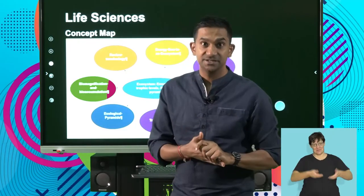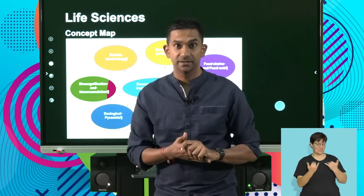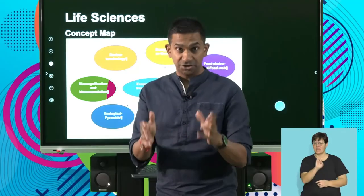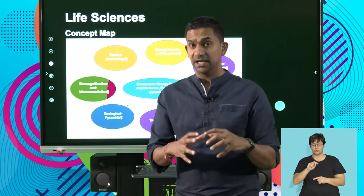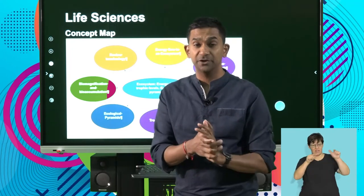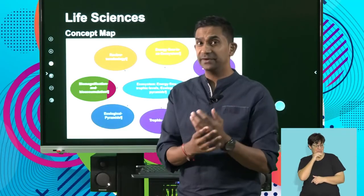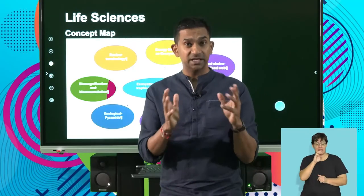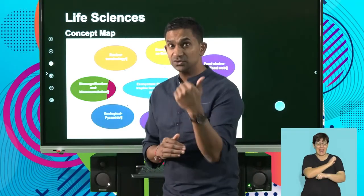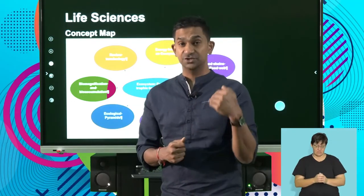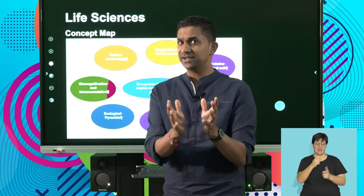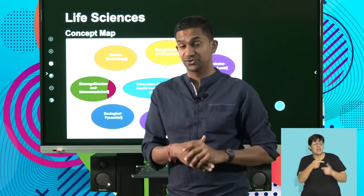Welcome back, Life Science Learners. We've been looking at ecological pyramids and energy flow in an ecosystem, and now we're going to spend some time looking at different trophic levels and what we mean by the concept of biomass. When we talk about ecosystems, energy flows in food chains, and we refer to positions as trophic levels. Let's understand what a trophic level is.